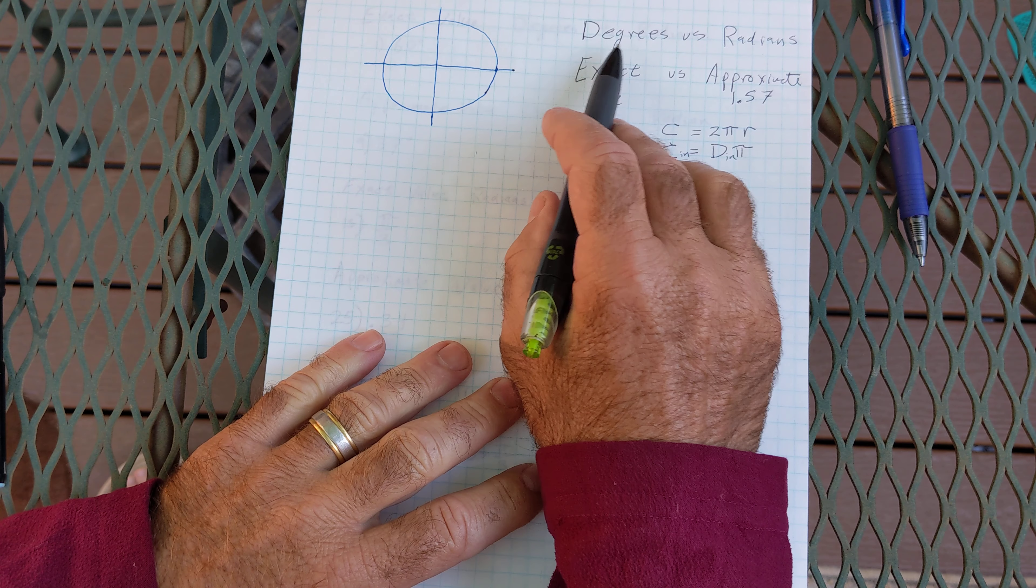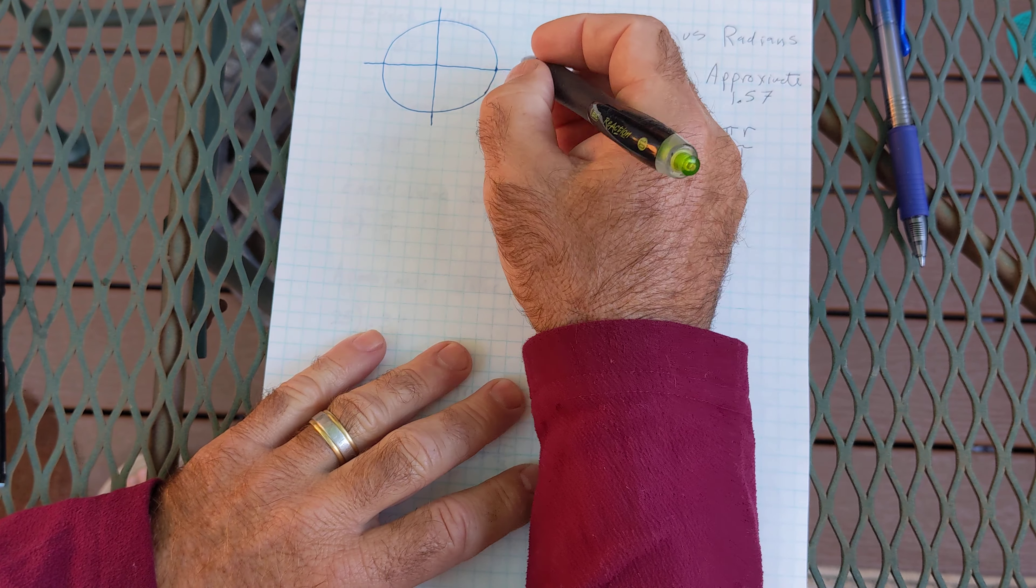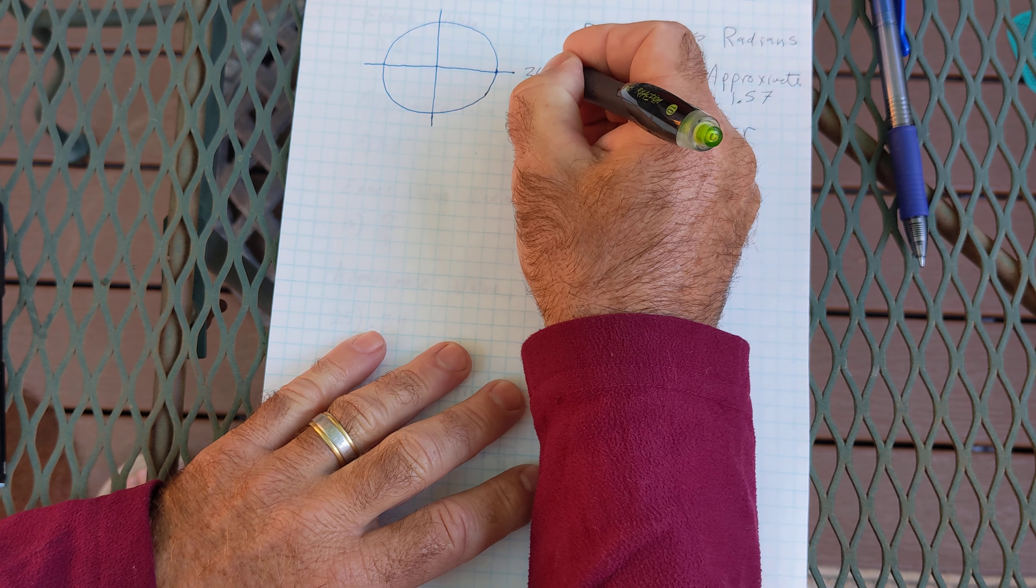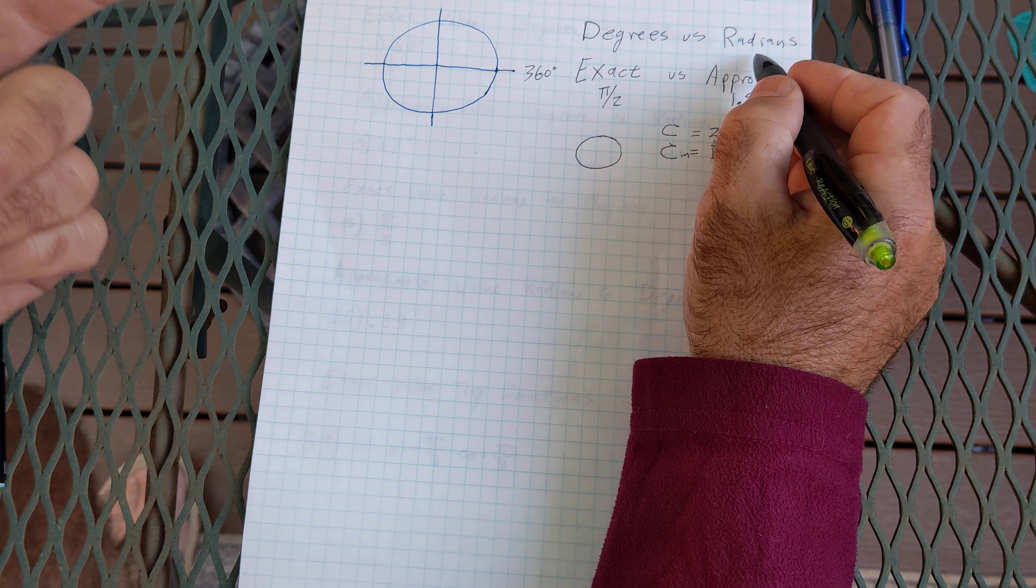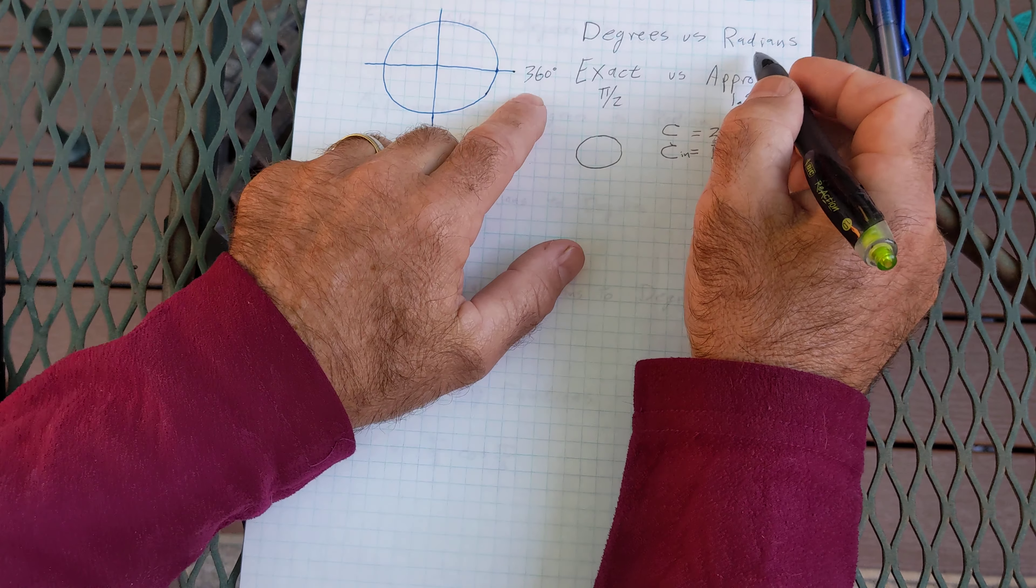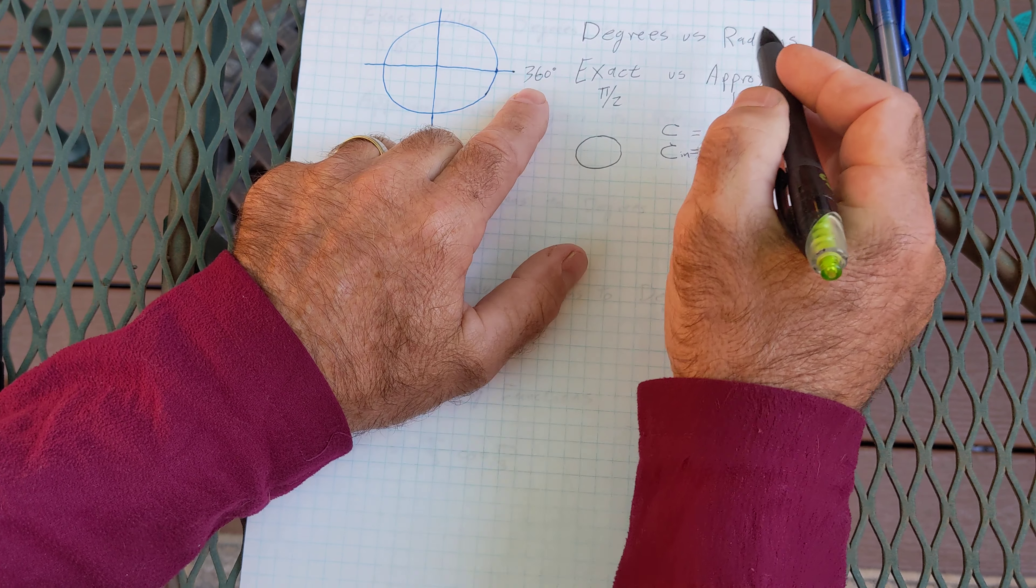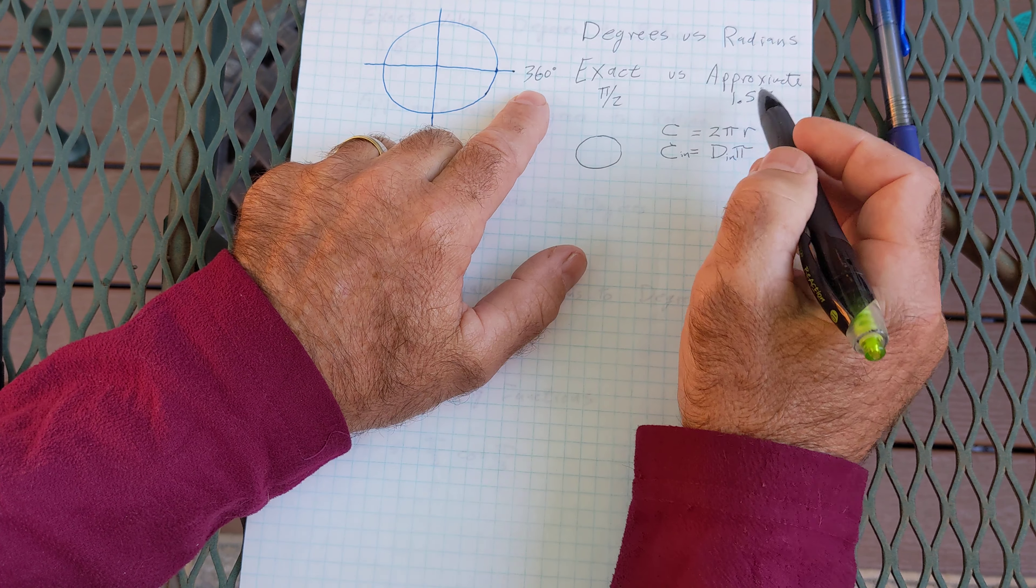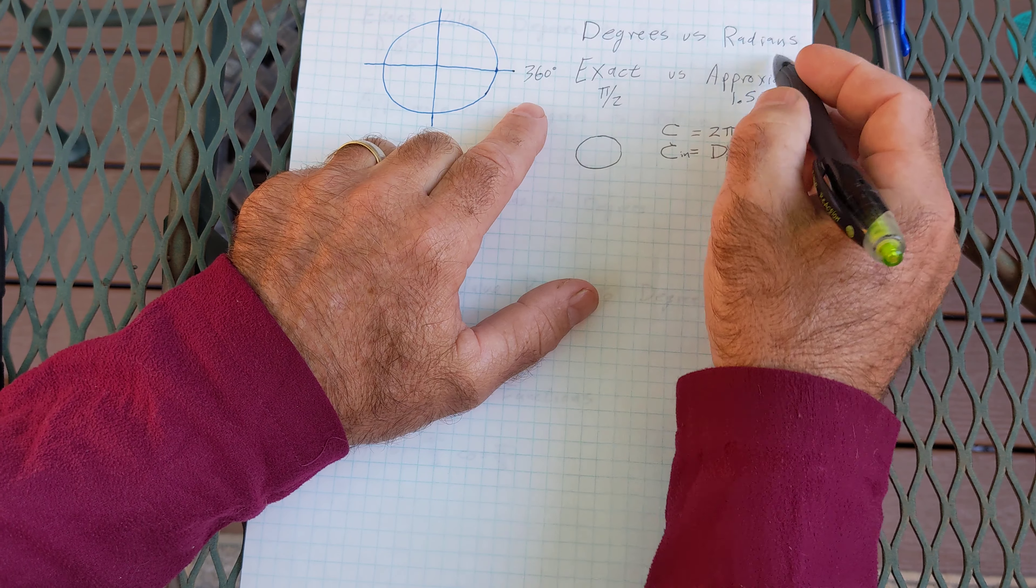The next thing is degrees versus radians. Degrees are units, all the way around the circle is 360 degrees. Radians are also units but they're actually unitless. So whenever you're working in degrees you always have to attach the unit to it.